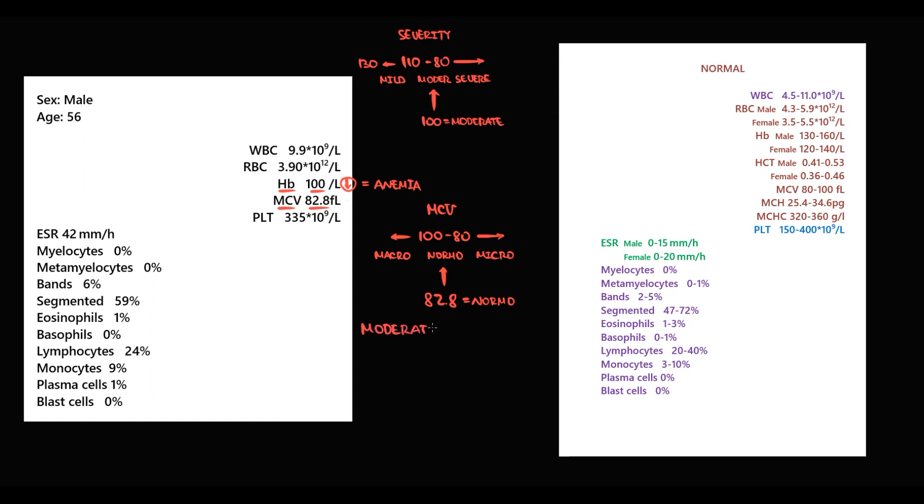Therefore, it's moderate normocytic anemia. Usually when hemoglobin is low, red blood cells are low, and in this case RBC is 3.9, which is lower than normal. The next value is platelets. Platelets are 335, which is normal.